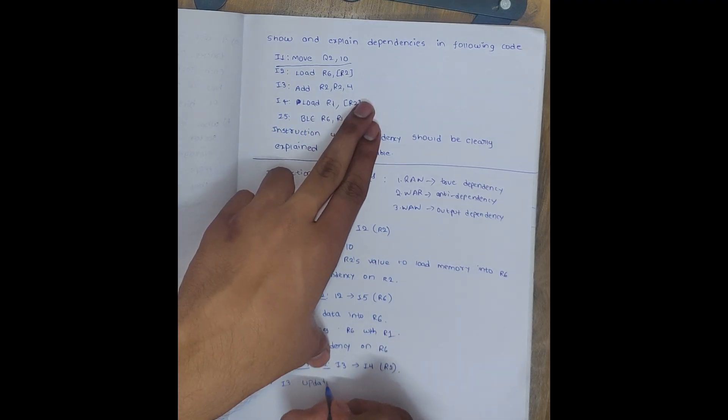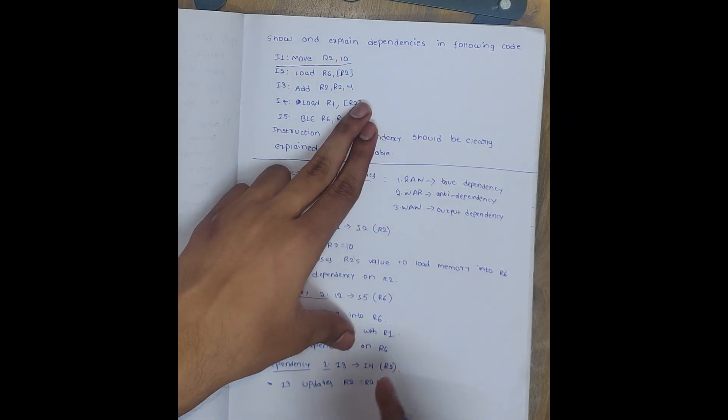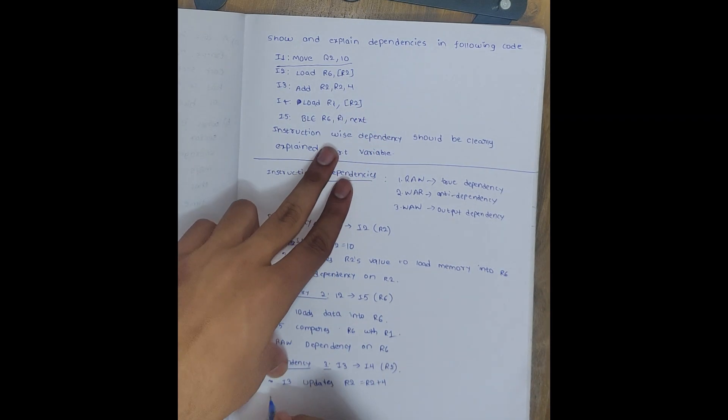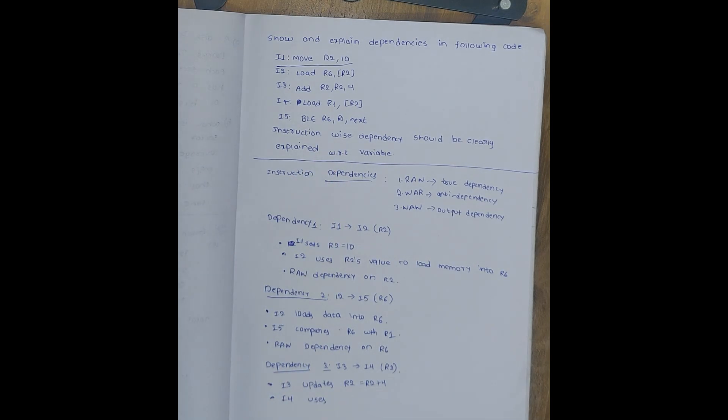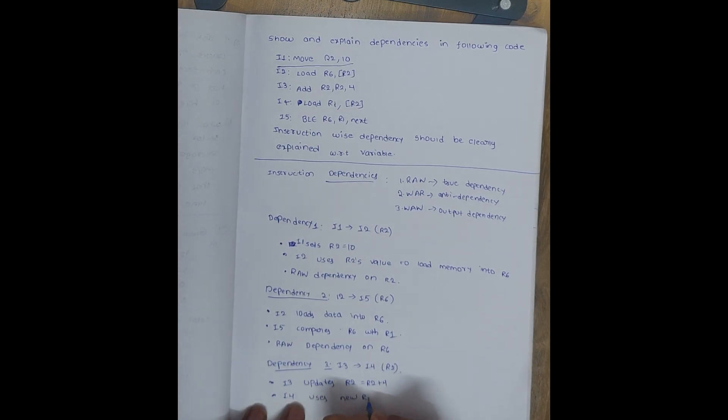R2 - that is equal to R2 = R2 + 4. R2 plus 4 it is adding and storing in R2, that means update. And after that, I4 uses - I4 uses new R2 - to load into R1.